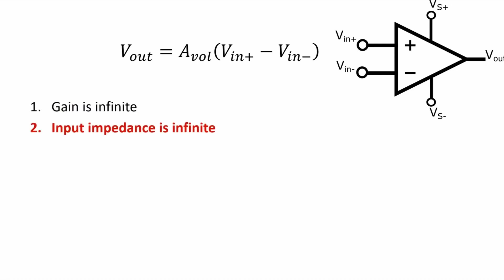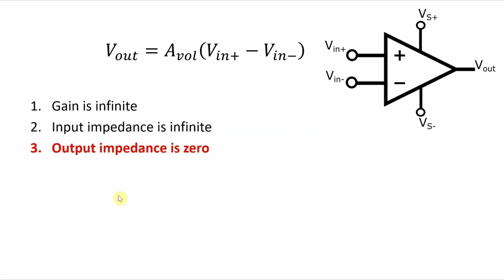Second ideal op-amp characteristic is the input impedance is infinite. This means that no current flows into either of the two inputs. Third, output impedance is zero. This means that the output voltage will not be affected by load.